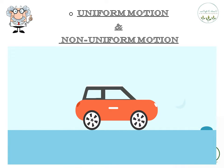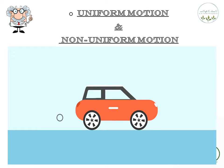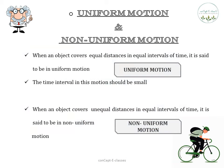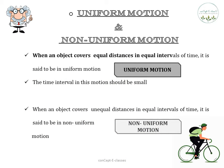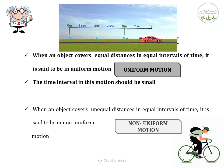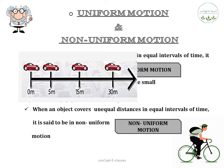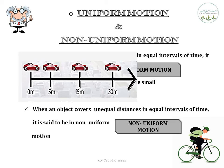We have understood what is motion, how to describe motion based on reference point, and about distance and displacement. Now let us see what is uniform motion and non-uniform motion. When an object covers equal distance in equal intervals of time, it is said to be in uniform motion. Whereas in non-uniform motion, the object covers unequal distance in equal intervals of time.